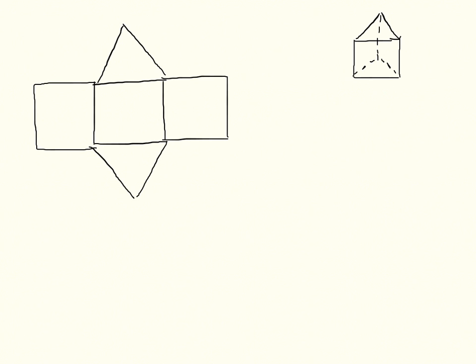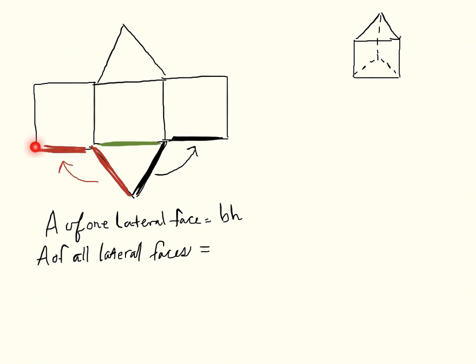The formulas work for oblique prisms as well, but for the sake of explaining I'm going to use right prisms. To find the lateral area, that would be all of the lateral faces put together. The lateral area of one lateral face is base times height, because that's how you find the area of a rectangle. Adding all three lateral faces together, the base of each rectangle corresponds to one side of the triangular base, so that total length is actually the perimeter of the base.